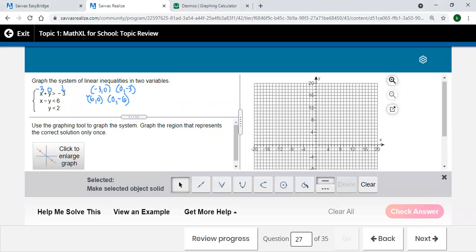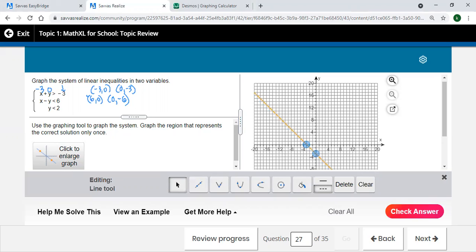So I get the line tool, make sure I'm on the dotted line, and then for that first one put a point at negative 3, 0. That's right there. Negative 3, 0 and 0, negative 3. Oh, it's putting it in afterwards. Okay, that usually pops right up when you set your first point.